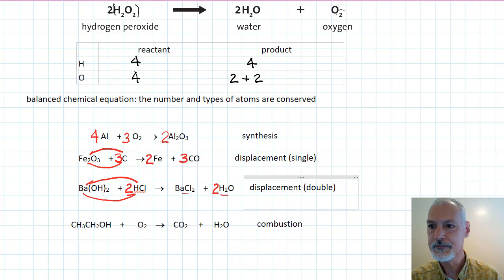The first step in balancing a combustion reaction is to focus on the element carbon. And in this case, there's two carbons, so I'm going to need two carbon dioxides. The next step is to balance the hydrogens. All together in this molecule, 3, 2, and 1, I have six hydrogens, therefore needing three.